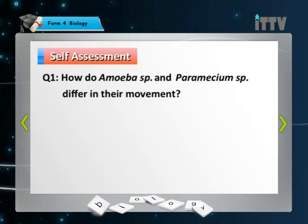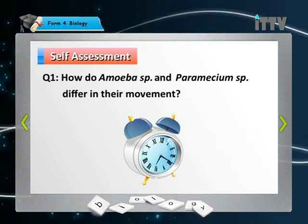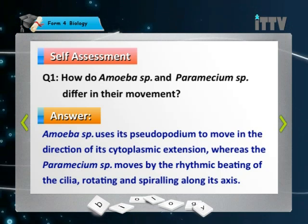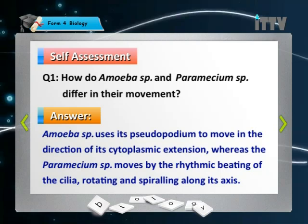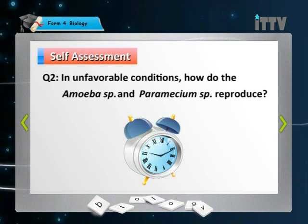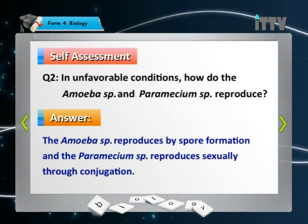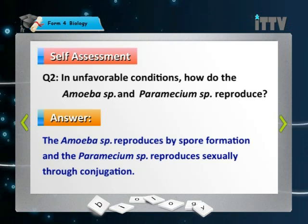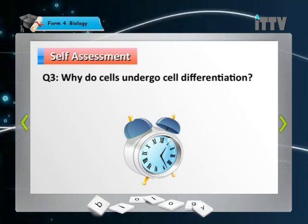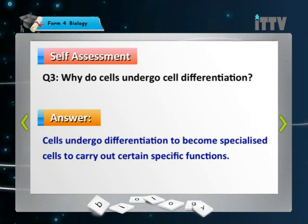Question 1: How do Amoeba and Paramecium differ in their movement? Amoeba uses its pseudopodium to move in the direction of its cytoplasmic extension, whereas Paramecium moves by the rhythmic beating of its cilia, rotating and spiralling along an axis. Question 2: In unfavourable conditions, how do Amoeba and Paramecium reproduce? Amoeba reproduces by spore formation and Paramecium reproduces sexually through conjugation. Question 3: Why do cells undergo cell differentiation? Cells undergo differentiation to become specialised cells to carry out certain specific functions.